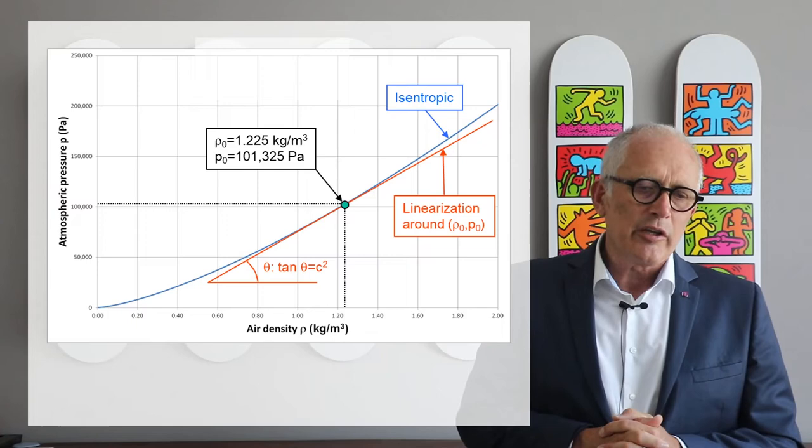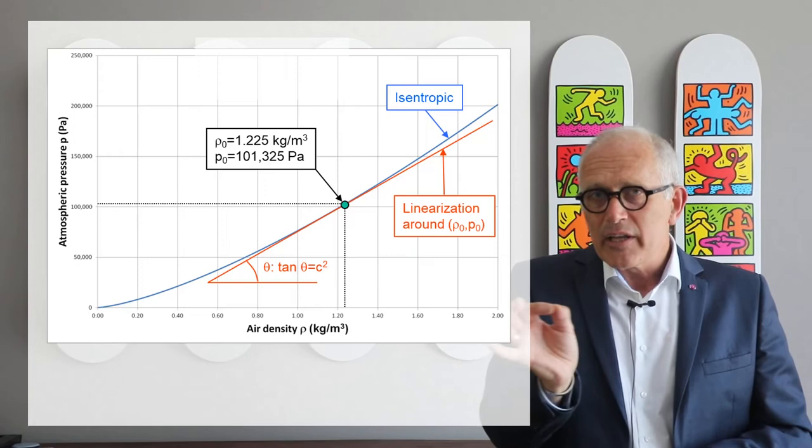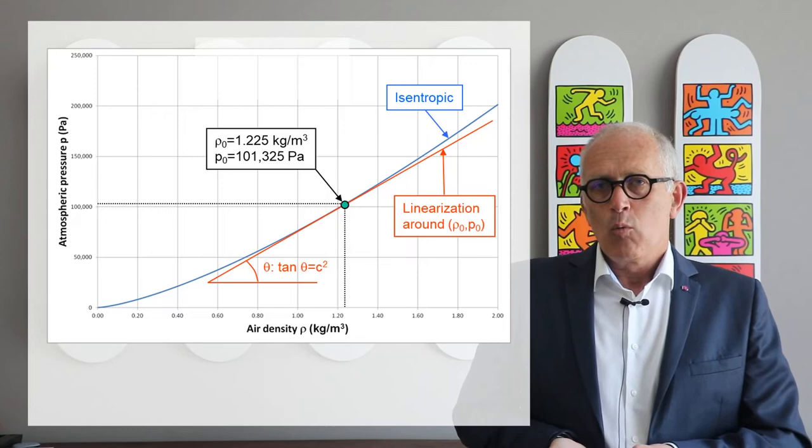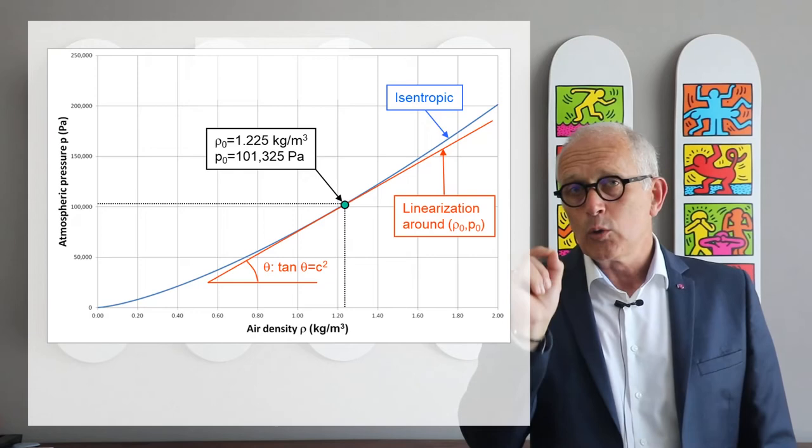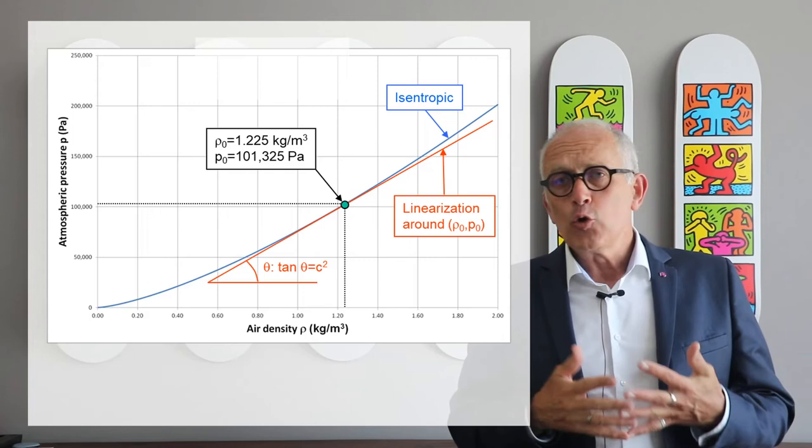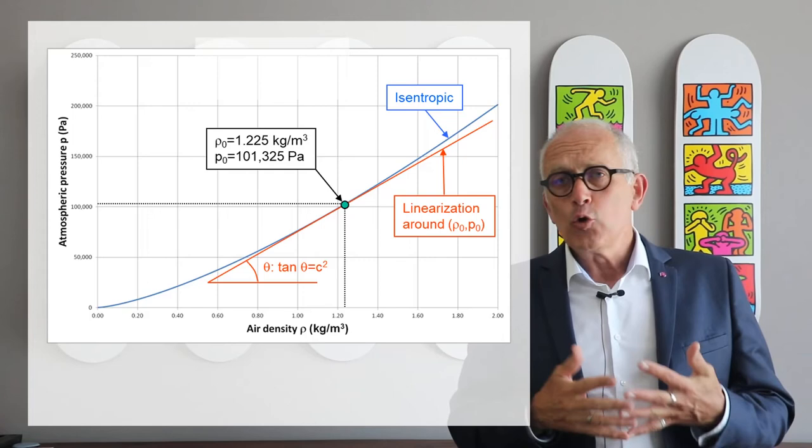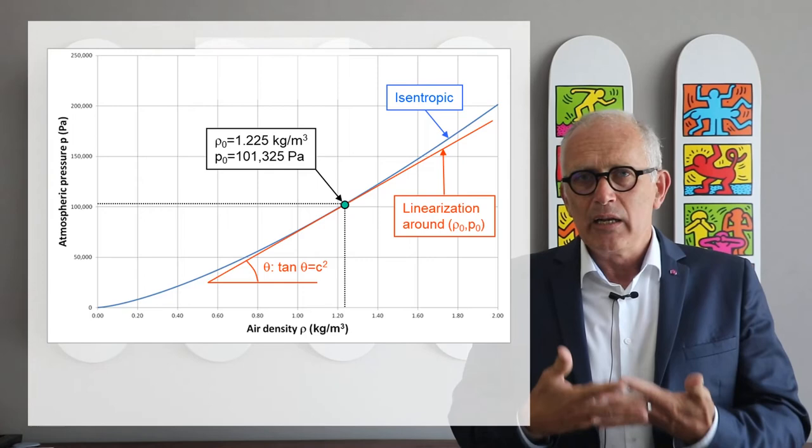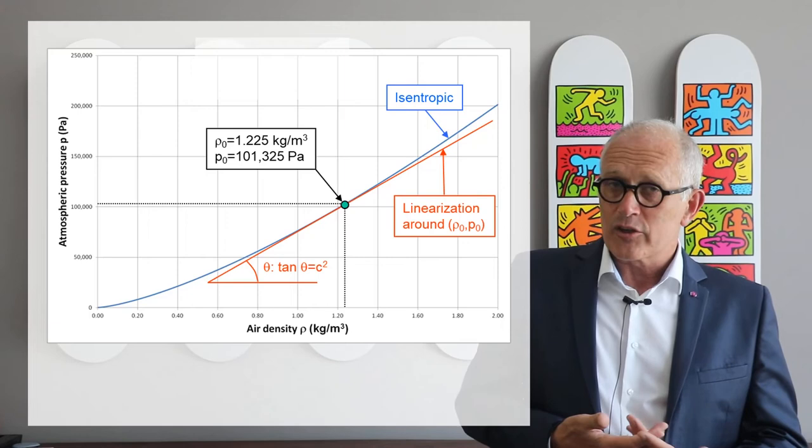But because we consider a constant pressure and tiny variation of that constant pressure and a constant density or specific mass plus a very small fluctuation of the specific mass, well, we are actually not concerned with the entire curve, but just with a single point on the curve. And then what happens very close to that point. And so locally we can also linearize this relationship. The pressure to density relationship is not linear, but because we are only concerned with what happens very close to one given point of the curve, we can linearize that.